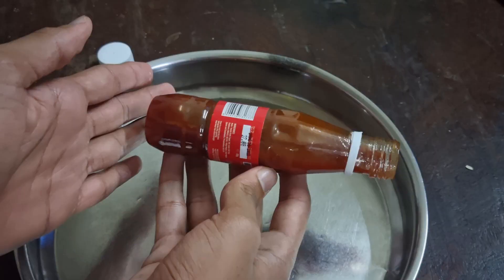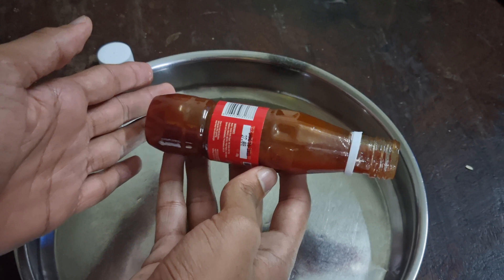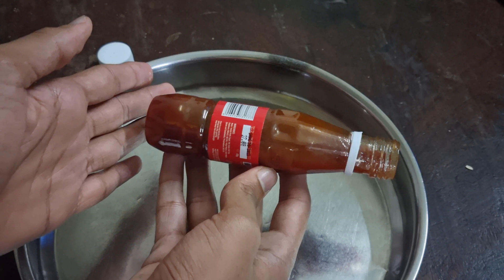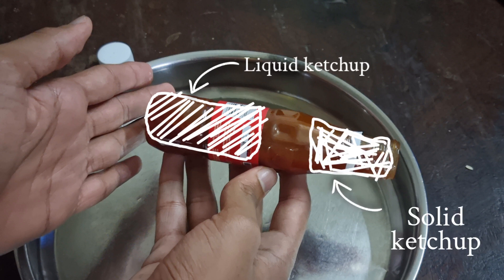When we hit the container at its back, the ketchup will feel a force, and the part where it felt a force will turn into liquid. So the back portion of the ketchup turns into liquid, but the front will remain as solid. So the front portion will stop all the liquid ketchup in the back from exiting the container.